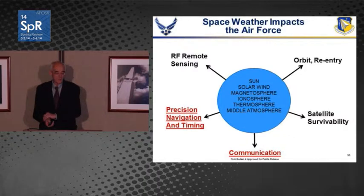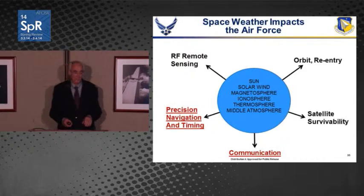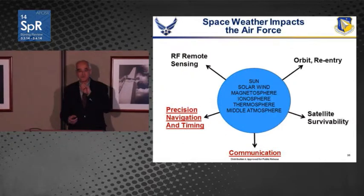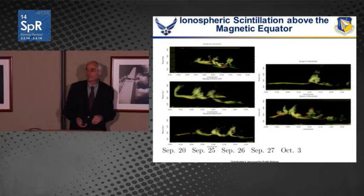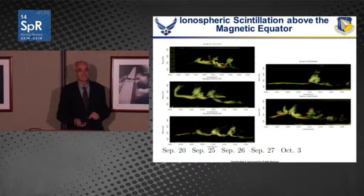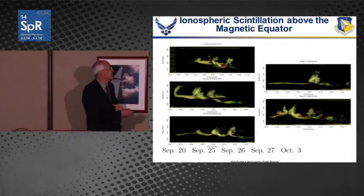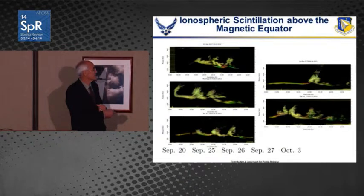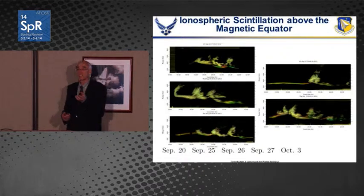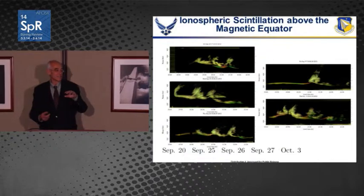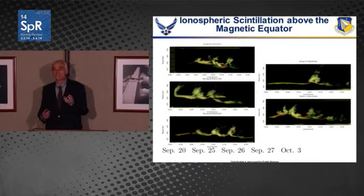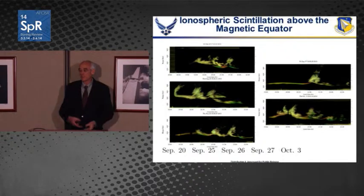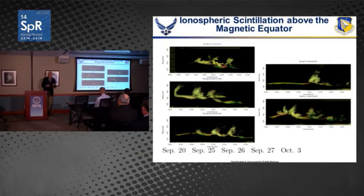Precision navigation, timing, and communication are grouped together because the problems come from the same origin: propagating a wave through the ionosphere. Radar backscatter plots from Jicamarca in Peru show altitude from 200 to 800 kilometers versus time from sunset to about midnight. As the ionosphere decays after sunset, the bottom becomes unstable and generates plasma bubbles that rise through the ionosphere, causing scintillation of radio waves. The radar echoes shown are from these plasma bubbles rising through the ionosphere.